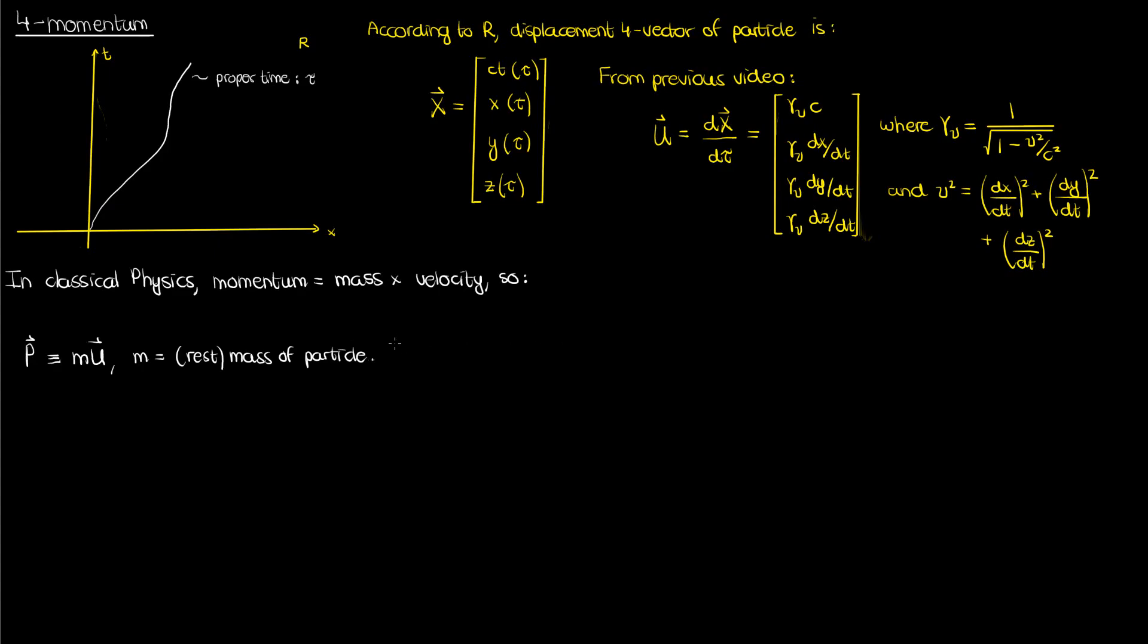Intuitively, you can see why this might be a good candidate for the four-momentum. It's consistent with the classical definition, and it also appears to fulfill what we want from a four-vector. The rest mass of a particle is a Lorentz scalar. It doesn't change no matter what inertial reference frame you're in, and if we multiply the four-vector u with a Lorentz scalar, we should still get a four-vector in the end, and that's why this definition of momentum ends up giving you a four-vector.